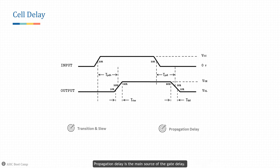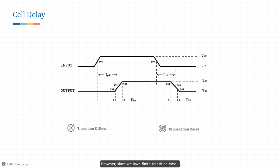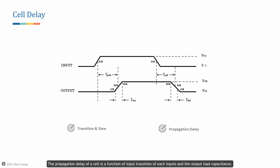Propagation delay is the main source of gate delay — it stands for the time needed to propagate through the logic cell itself. If the transition time is ideal (zero), then the propagation delay is purely the delay between two transition edges. Since we have finite transition time, the propagation delay is defined as the delay between 50% of the input waveform and 50% of the output waveform. The propagation delay of a cell is a function of input transition of each input and the output load capacitance.